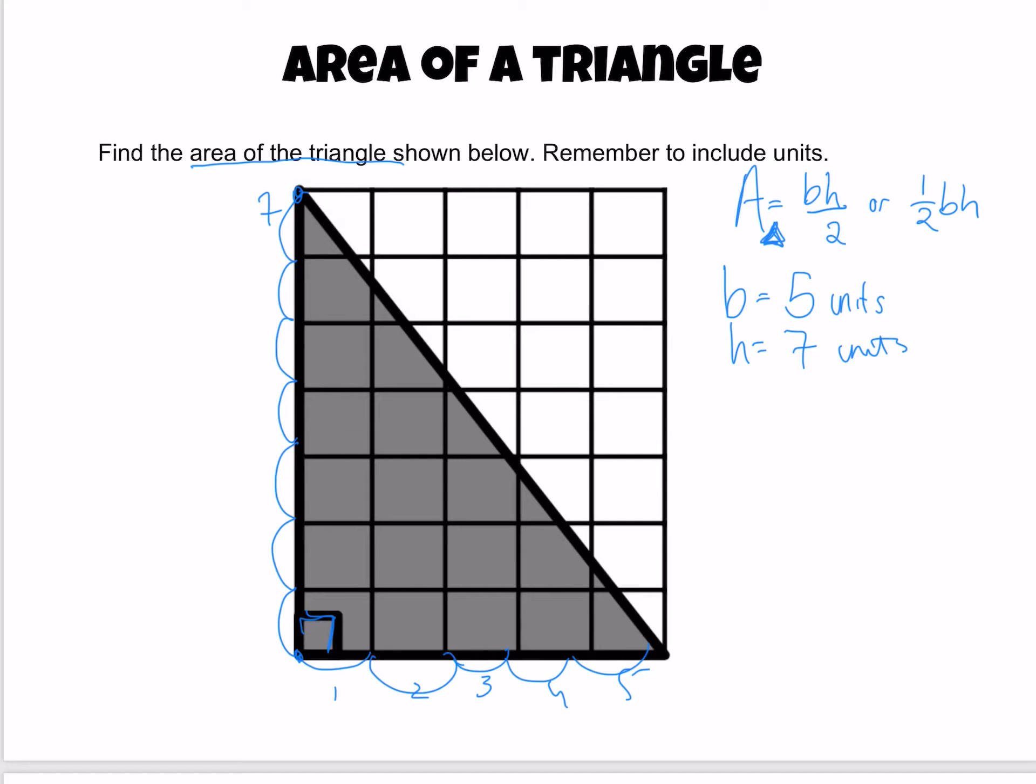Alright, we're almost there. Now we just need to plug this into our formula. Area is base times height over two. I'll plug in five times seven over two. Don't forget that.